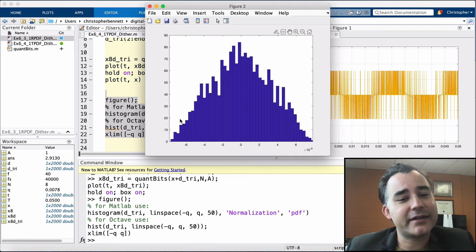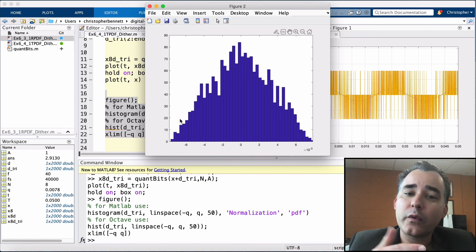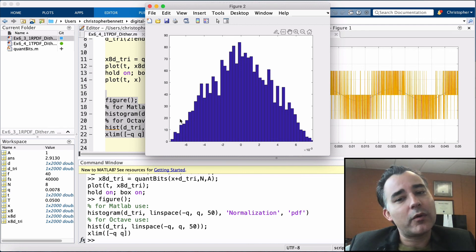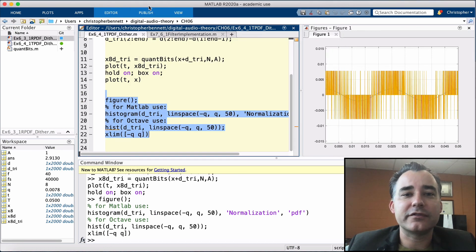So the RPDF dither adds three decibels to our noise floor. Whereas the triangular PDF adds six decibels to our noise floor. So this is the hit we take. But what we gain is a further reduction of noise modulation that occurs with very low level signals.